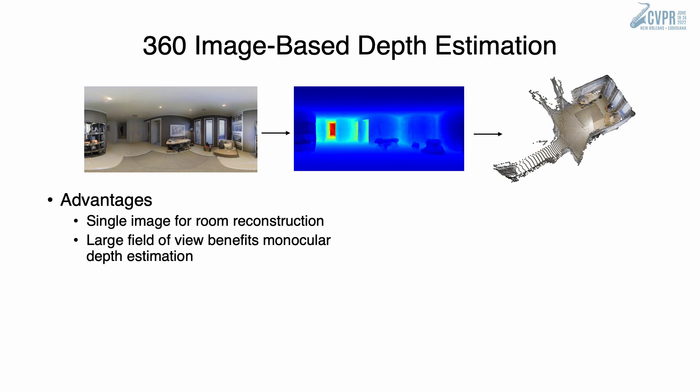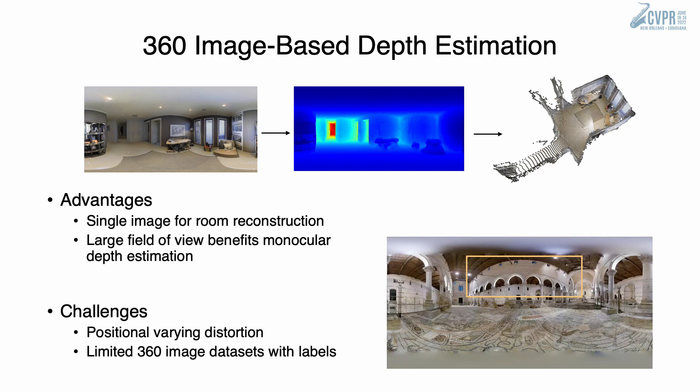360 image format has advantages. For example, a single 360 image is sufficient for room reconstruction because of its large field of view. Using 360 images is also challenging. There is positional varying distortion on 360 images, and a limited number of datasets are available with labels.